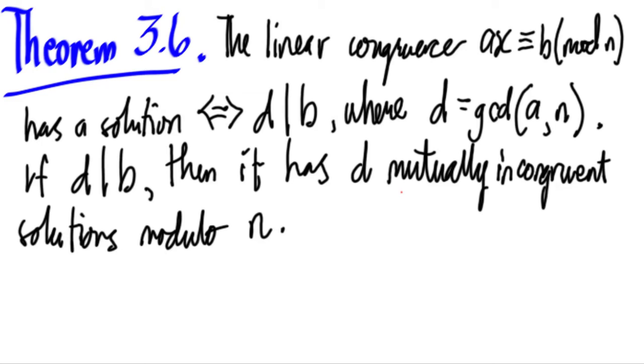Theorem 3.6 states that the linear congruence Ax is congruent to b mod n has a solution if and only if d divides b, where d is the gcd of a and n. If d divides b, then it has d mutually incongruent solutions mod n.